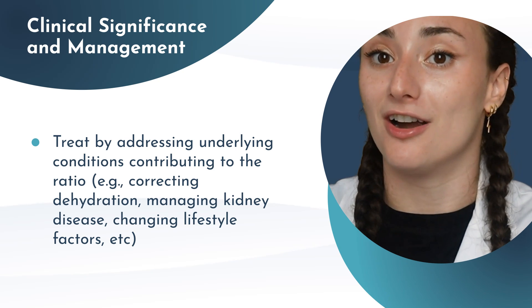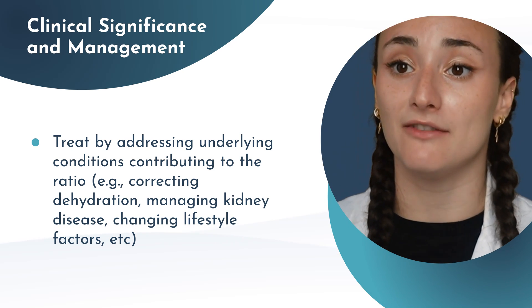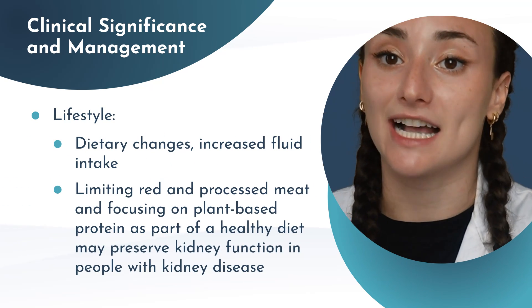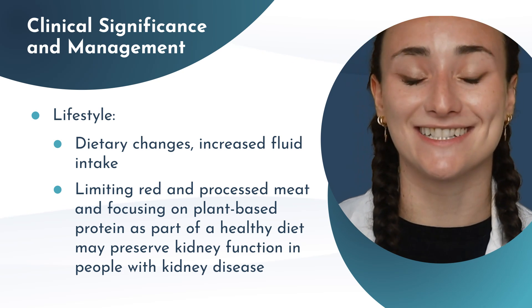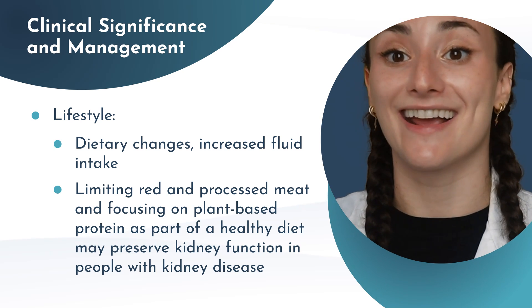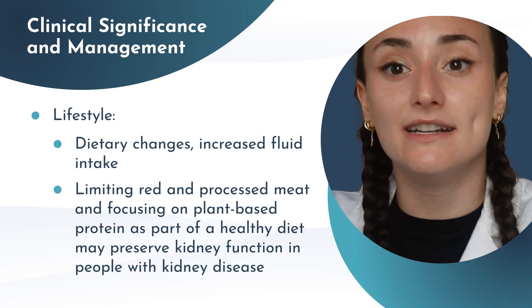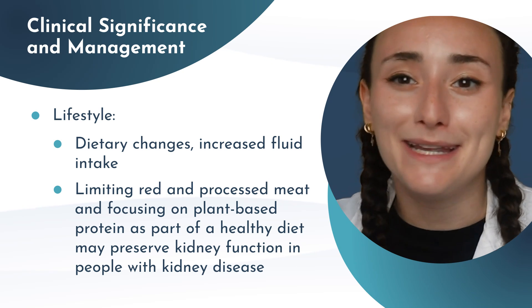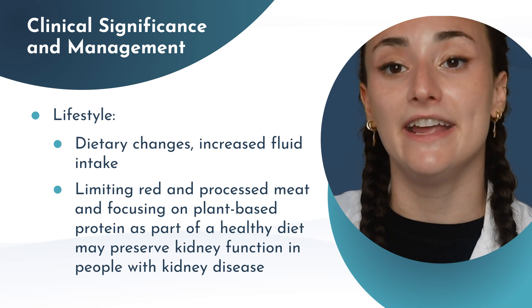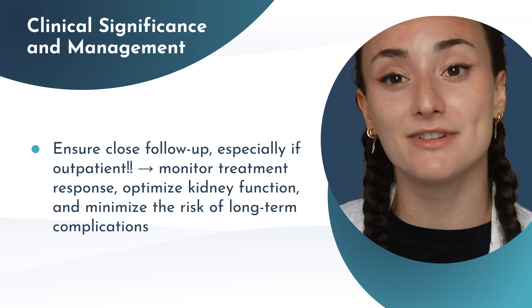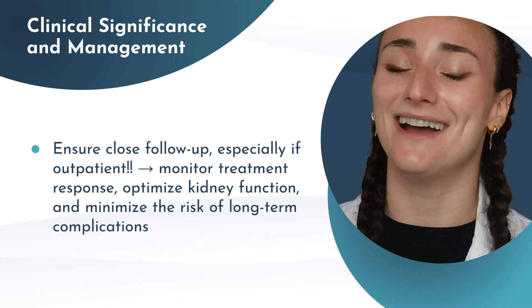Inpatient treatment decisions are highly variable based on what you have in front of you, but generally outpatient we can improve this ratio and kidney function through lifestyle changes. This includes really encouraging good hydration — I learned back in the day that you want your urine to look like chardonnay, and that one really stuck with me. For individuals with chronic kidney disease living an outpatient lifestyle, changes like limiting red meat and processed meat and eating plant-based can lead to improvements in kidney function, optimizing function and hopefully minimizing the risk of long-term complications.